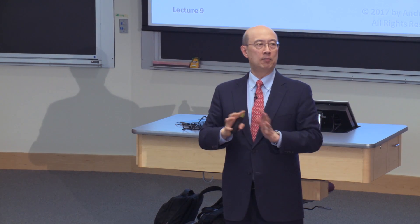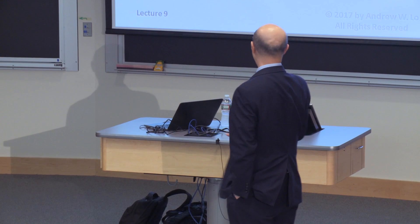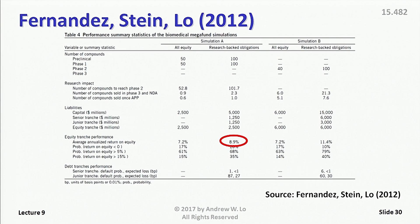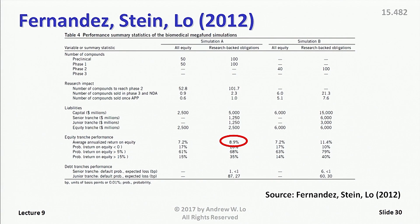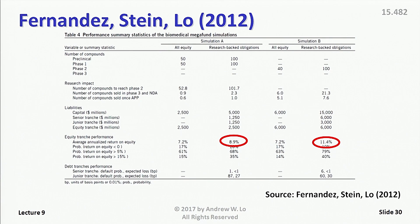What we found really blew us away. For the early stage fund, which we scaled at about $5 billion, the equity tranche earned a rate of return of about 8.9%. The debt tranches, we assumed, were paying 5% and 8% yield — which in our view was quite generous, higher than market rates for bonds of equivalent risk at that time. For the later stage — phase two all the way through NDA — that was a $15 billion fund. The $15 billion fund earned, on the equity side, a rate of return of 11.4%, and the bond risks were commensurate with the risks seen in the industry for the appropriate ratings categories.